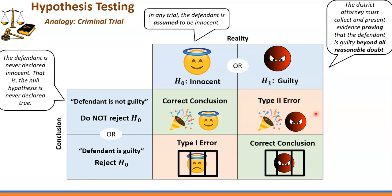Another important idea: in a real criminal trial, or in statistics, what we call 'reality' — innocent versus guilty — is unknown. We don't know what the reality is. Our goal is to find and provide enough evidence that either supports the null hypothesis, in which case we say do not reject H0, or does not support the null hypothesis, in which case we reject H0.